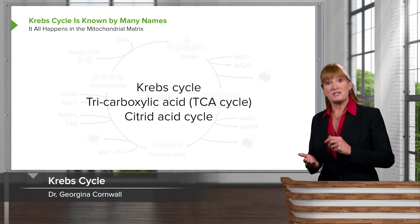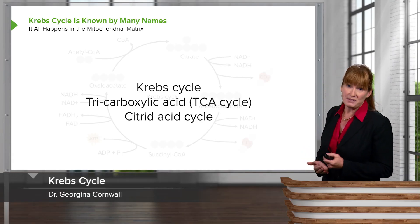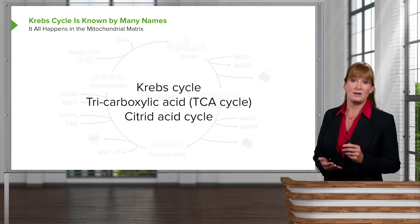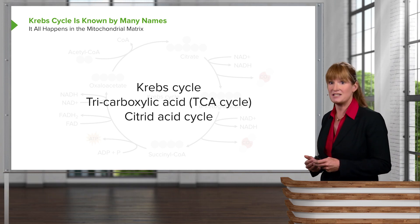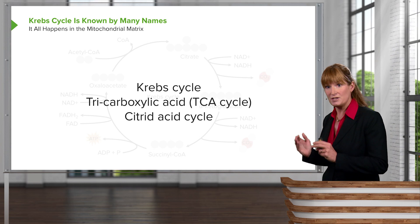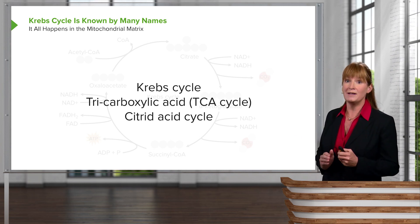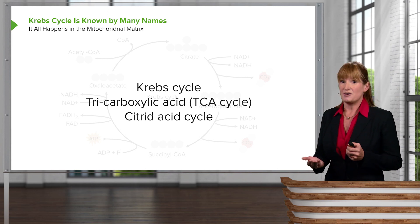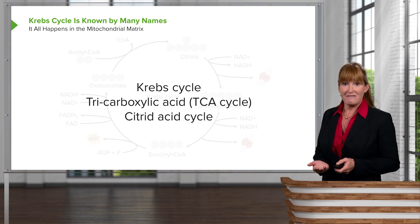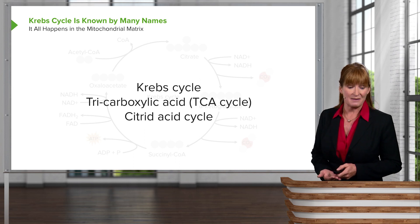The first part we start with is the Krebs cycle. However, the Krebs cycle has a few different names. We could call it the tricarboxylic acid cycle, or TCA cycle for short, or you could call it the citric acid cycle. These are all naming conventions with different reasons, but they all mean precisely the same thing.